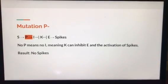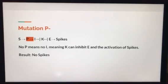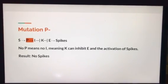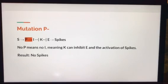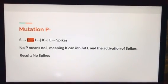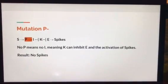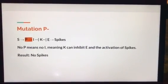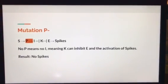Our first mutation looks at the deactivation of gene P. When P is not produced, then I cannot be produced, meaning K is allowed to inhibit E and the activation of spikes. The result would be no spikes.